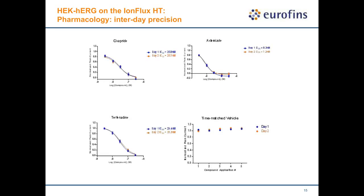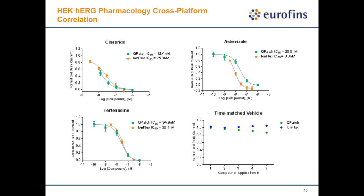In the next set of experiments, we assessed intraday precision to test assay robustness. We picked three compounds — cisapride, astemizole, and dofetilide — plus time-matched vehicle control, and tested them on two different days. The IC50 values between day one and day two were very close, showing the hERG assay on IonFlux is very robust. Comparing potency values between QPatch and IonFlux, both agreed with each other, and the time-matched vehicle control showed very good minimal rundown.